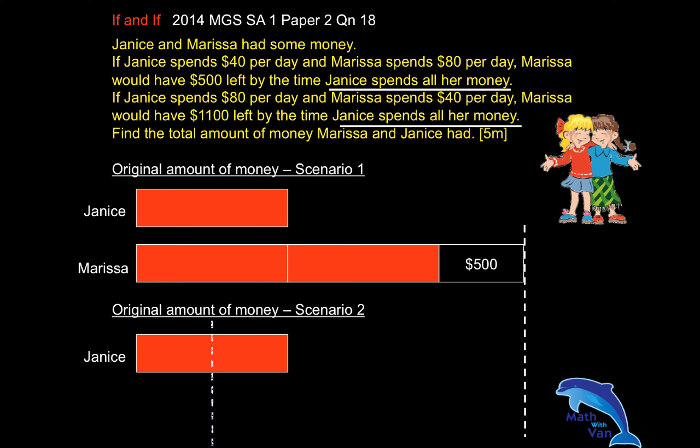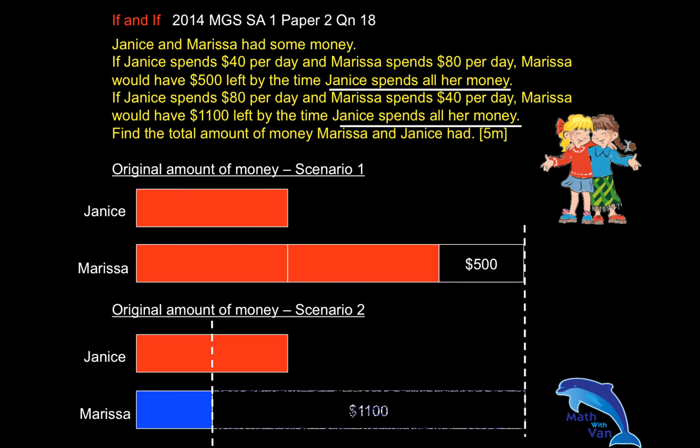We can see that Marissa spent half of what Jenny spent. So half of the red block — let's denote it with a different color, blue. And Marissa would have $1,100 left. Draw another long block that reaches all the way to the dotted line, because this is the original amount of money — they are the same.